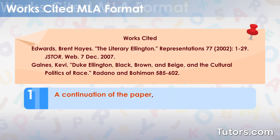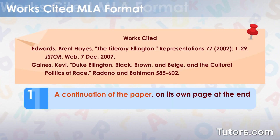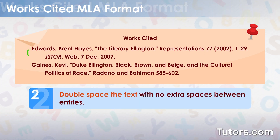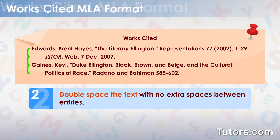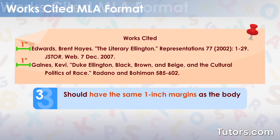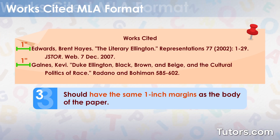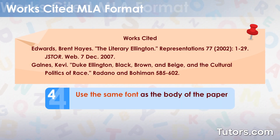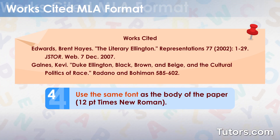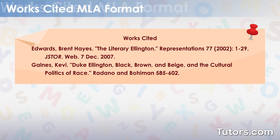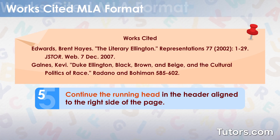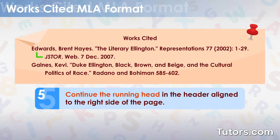The Works Cited page is a continuation of the paper, on its own page, at the end of the document. Double-space the text with no extra spaces between entries. The page should have the same one-inch margins as the body of the paper. Use the same font as the body of the paper, typically 12 point Times New Roman. The writer's name and page number should continue in a running head from the body of the paper in the header, aligned to the right side of the page.